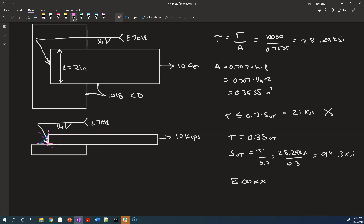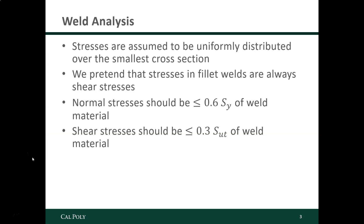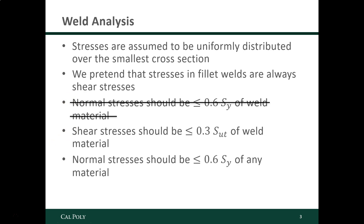The purpose of this video is to analyze not just the welds — we've already done that — but also the attachment between the welds and the part, and the part itself. One new rule we have is that normal stresses should be less than or equal to 0.6 times the yield strength of any material involved. You need to make sure that stresses in the weld are less than 0.6 times the yield strength of the weld material, and at the attachment and far away from it in the part itself, keep normal stresses below 0.6 times the yield strength of that material.